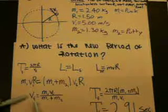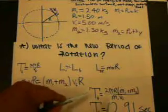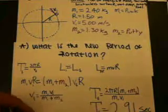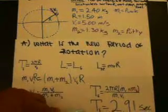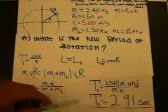Plugging in this velocity into the formula for the period, we get this formula over here, and after solving all that out, we find that the new period of rotation is 2.91 seconds.